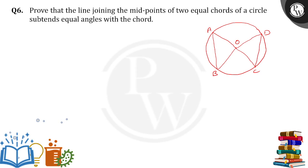Now, prove that the line joining the midpoints of the two equal chords. Two equal chords mean AB is given as equal to CD. Taking AB midpoint as M and CD midpoint as N. If I join OM and ON, they will subtend equal angles with the chord. That is what we need to prove.